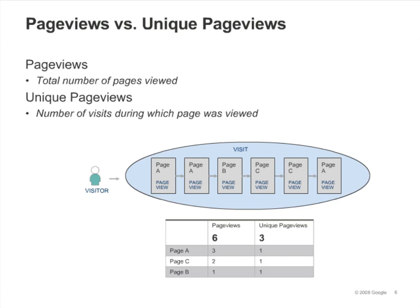A unique pageview represents the number of visits during which the page was viewed, whether one or more times. In other words, if a visitor views page A three times during one visit, Google Analytics will count this as three pageviews and one unique pageview.